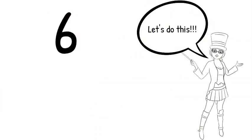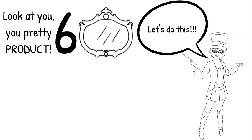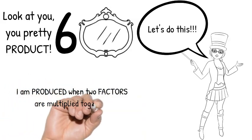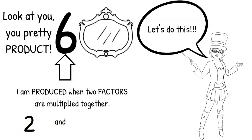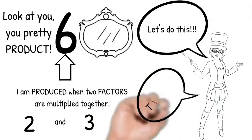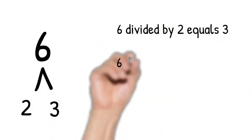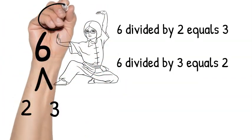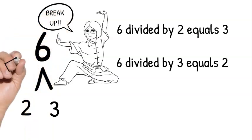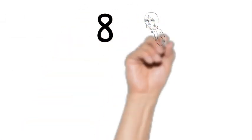We're going to jump right into prime factorization. Let's look at the number six — it's a product, meaning it is produced by two factors. What two factors come together to produce six? Two and three! Two times three gives you six, and six divided by two gives you three, six divided by three gives you two. So we have our big number on top, which is our product, and our two factors below.